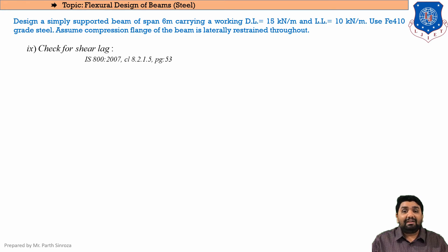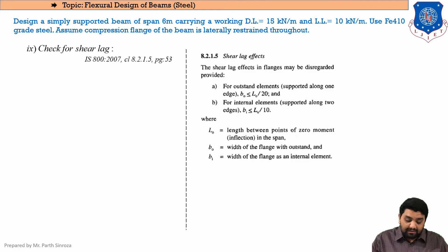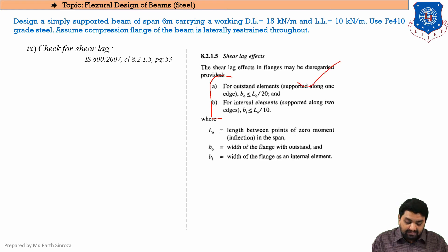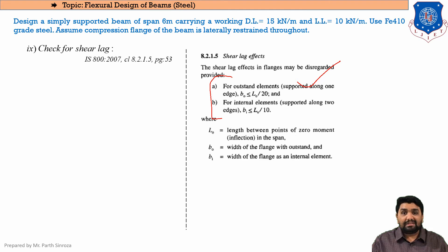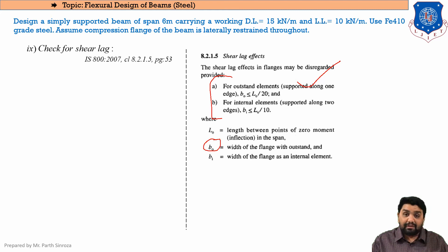Three additional checks are required only for laterally supported sections. Check 1 is for shear lag, from clause 8.2.1.5 (page 53). For outstand elements, the condition is BO ≤ L0/20. If this fails, shear lag design is required, but in practice this condition is always satisfied. Here, BO is the flange width and L0 is the span (length between zero-moment points).